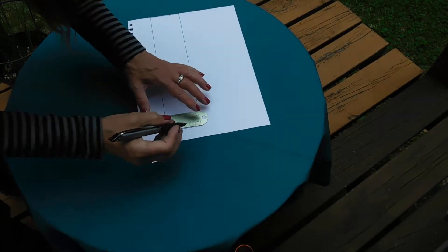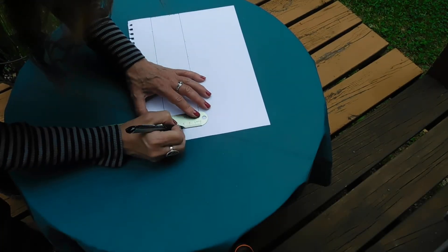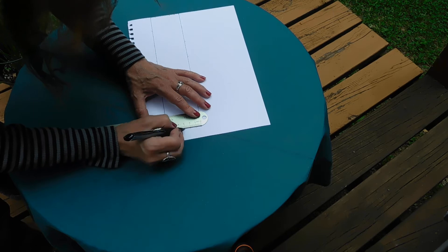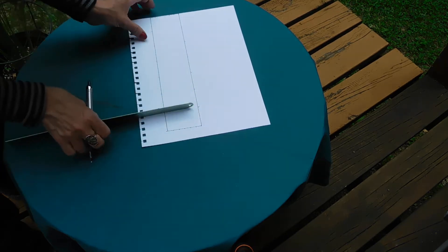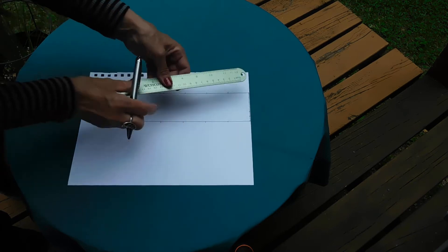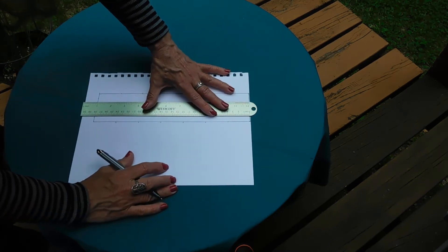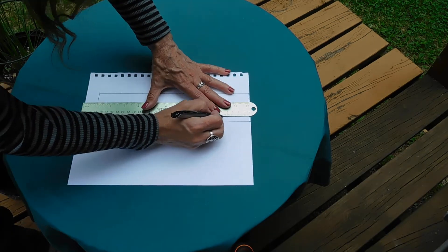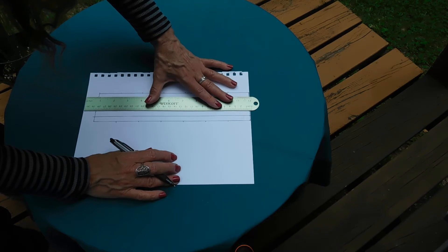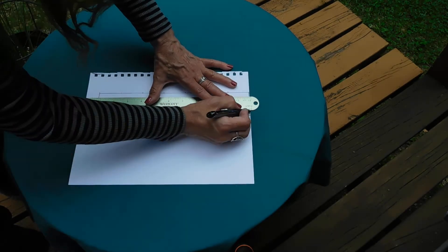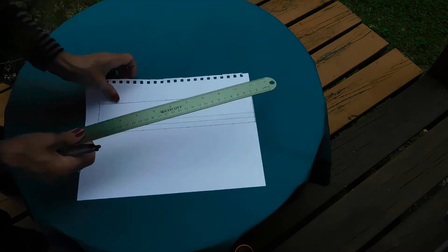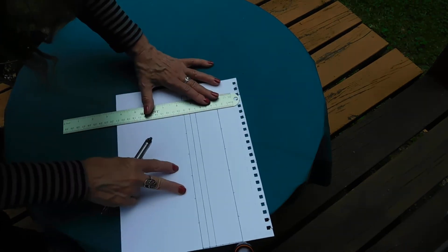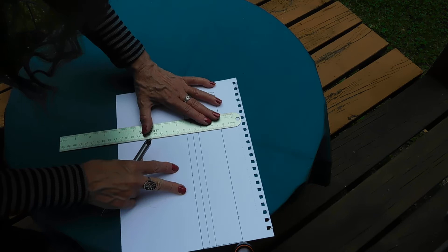I'm going to go along the top and then along the bottom and make marks every 4 centimeters. Then I'm going to make a mark every 1 centimeter along the short edge. I'm going to draw lines to connect my marks that are parallel to one another along the long edge.